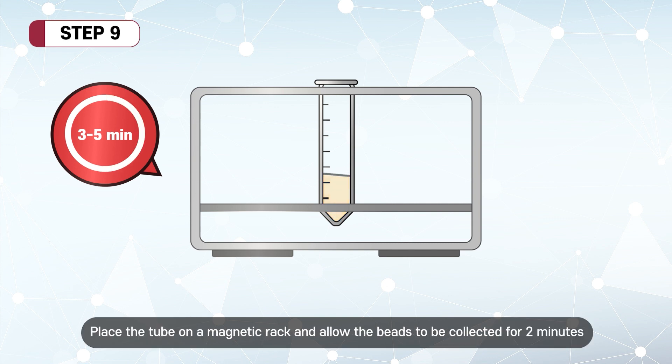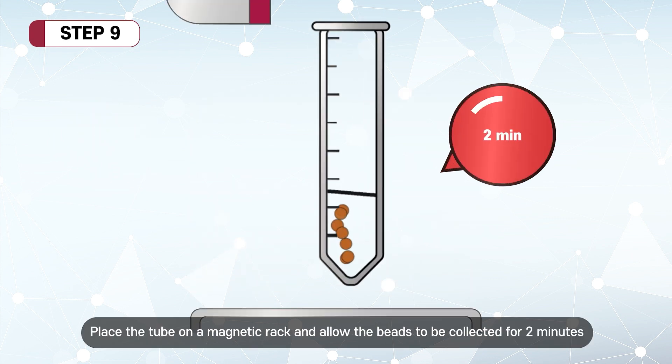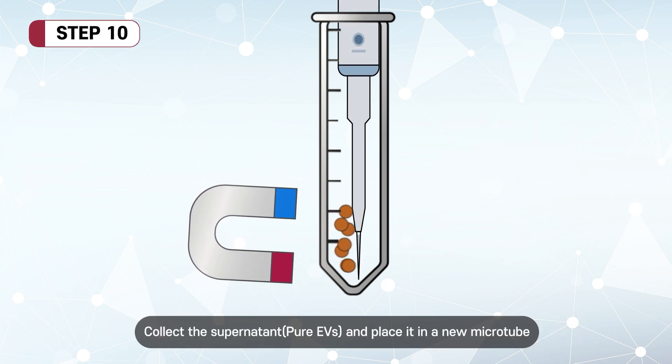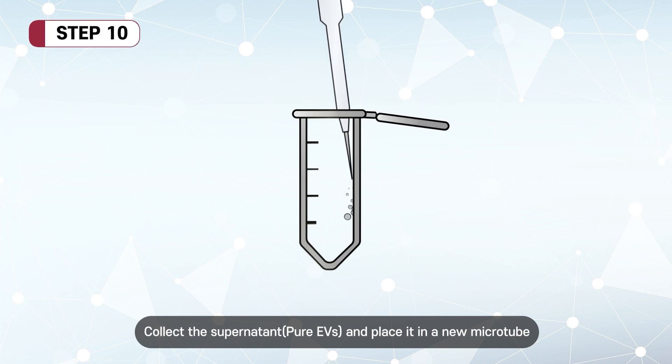Place the tube on a magnetic rack and allow the beads to be collected for 2 minutes. Collect the supernatant, pure EVs, and place it in a new microtube.